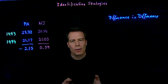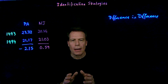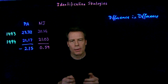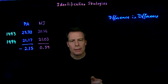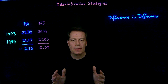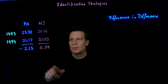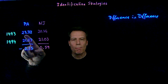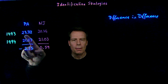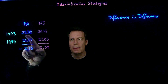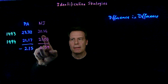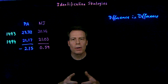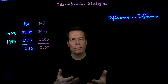David Card found how much employment there was in the average fast food restaurant in New Jersey and in Pennsylvania within the city of Philadelphia. In 1993, there were more average employees per fast food restaurant in Pennsylvania than in New Jersey, suggesting that there were in fact differences between the two parts of the city.